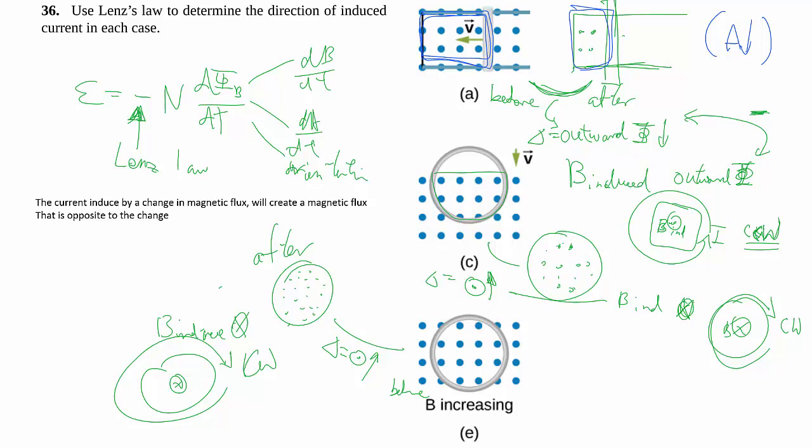So hopefully through these examples you can see how we determine the direction of the current flow which, as summarized by Lenz's law, is that the current created always creates a magnetic field that opposes the change that we're introducing in terms of the flux and thus the negative sign there.